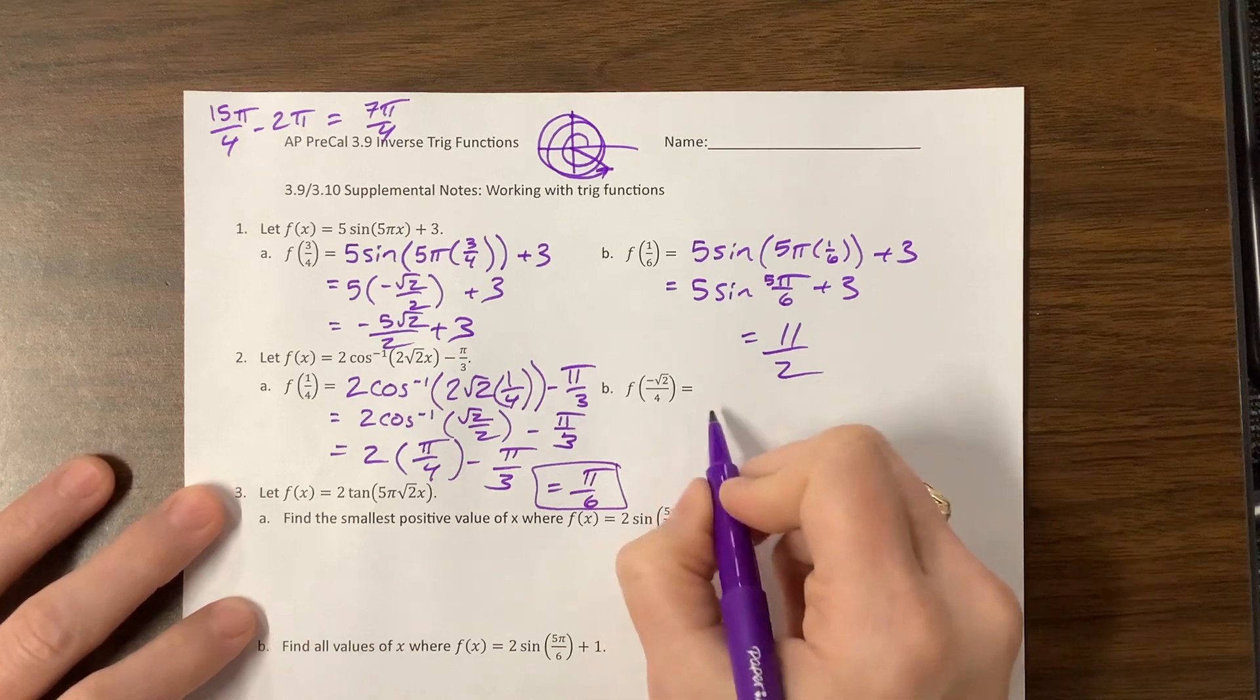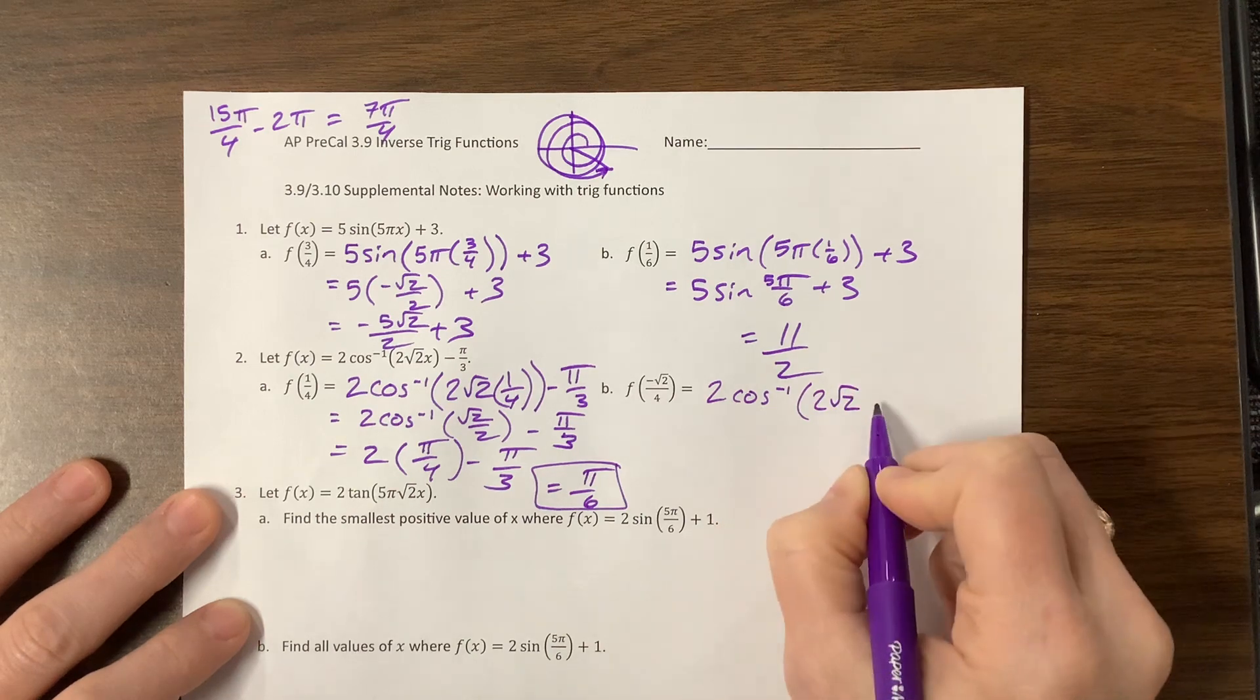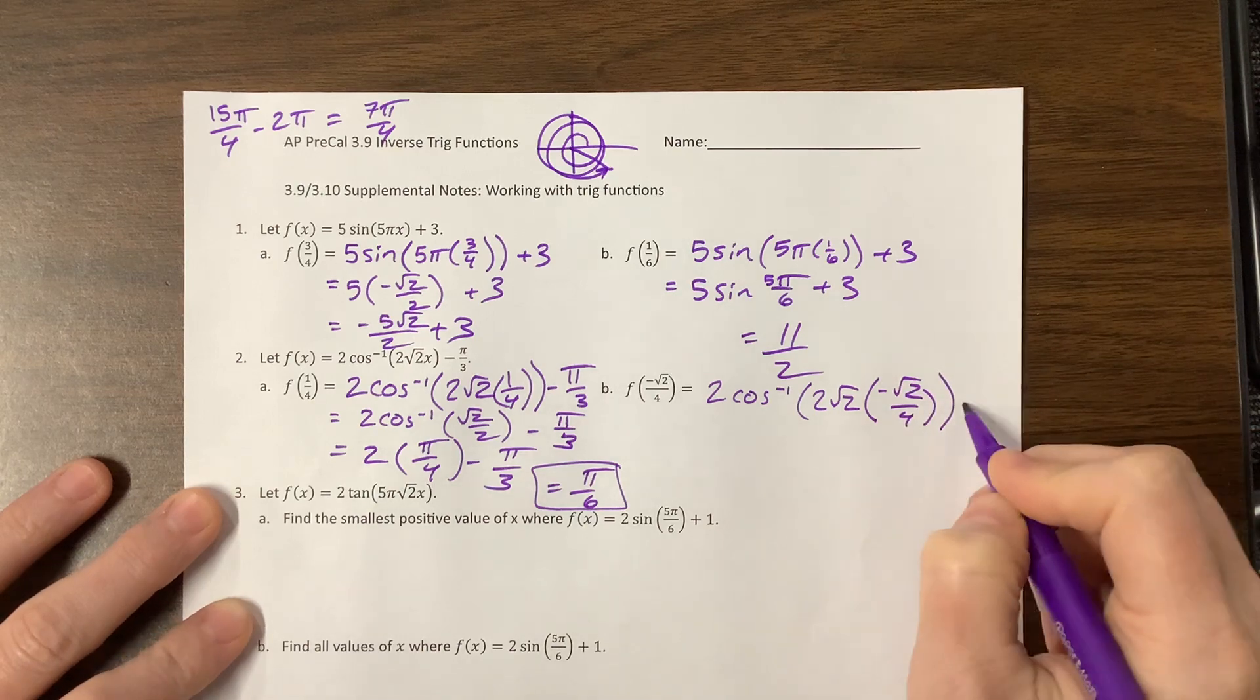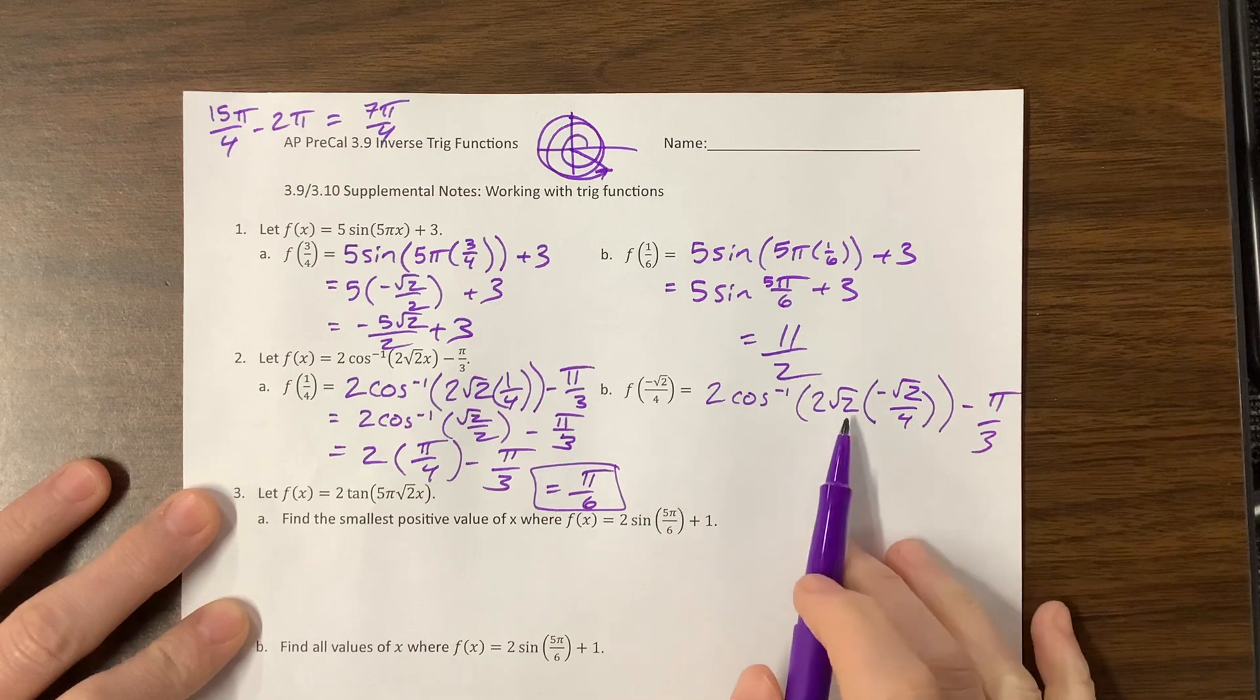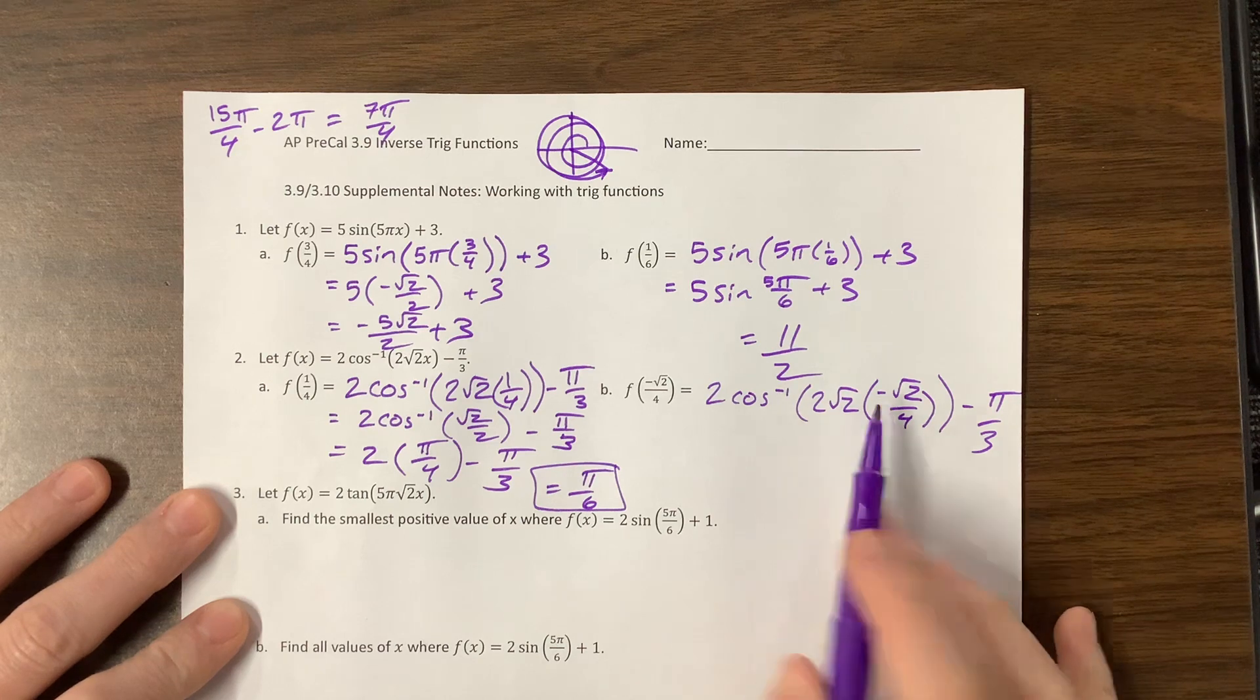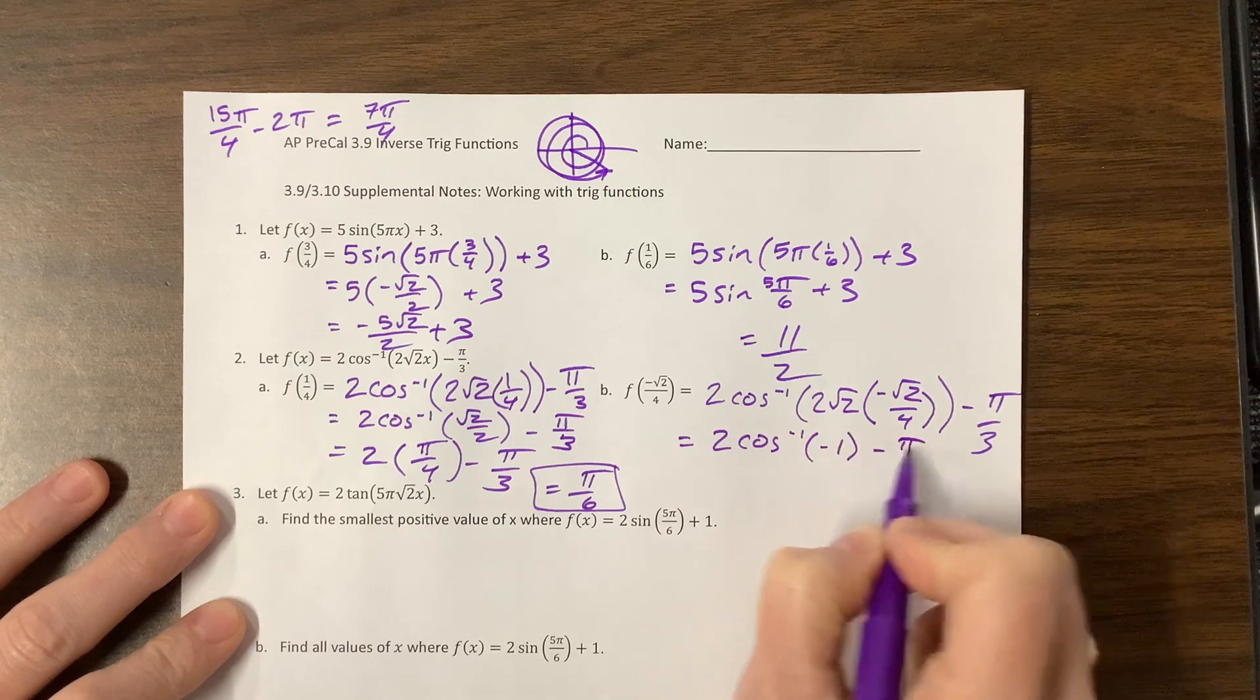The next one I have 2 inverse cosine of 2√2 times -√2/4 minus π/3. This √2 times √2 gives me 2, times this 2 is 4, and that's being divided by 4 but it was negative. So this is 2 inverse cosine of -1 minus π/3.